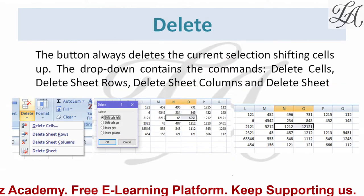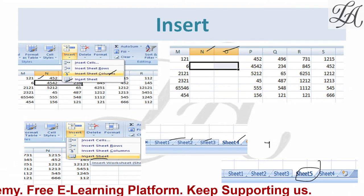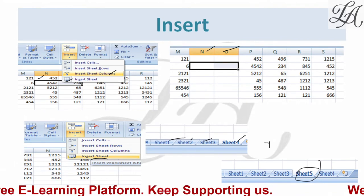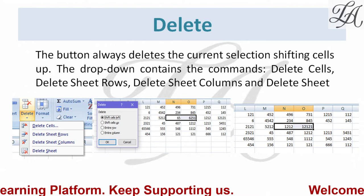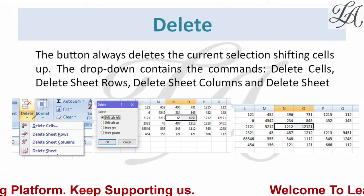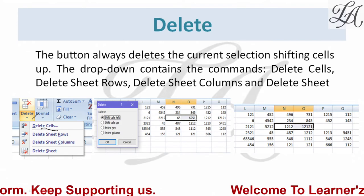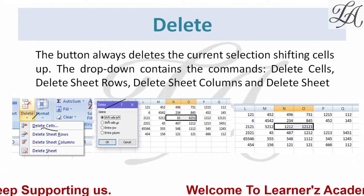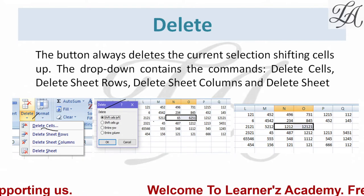These are the options of Insert: Insert Cell, Insert Sheet Rows, Insert Sheet Column, and Insert Sheet. Similarly, we can go for the Delete part. In Delete, you will also get Delete Cell, Delete Sheet Rows, Delete Sheet Columns, and Delete Sheet. Delete is also a drop-down menu with four options available.